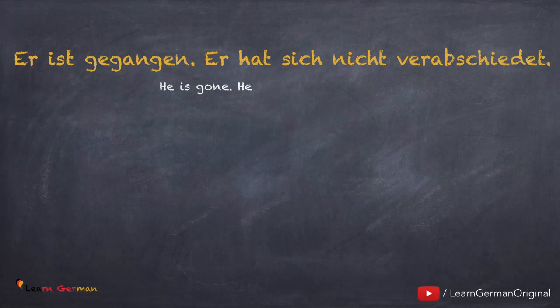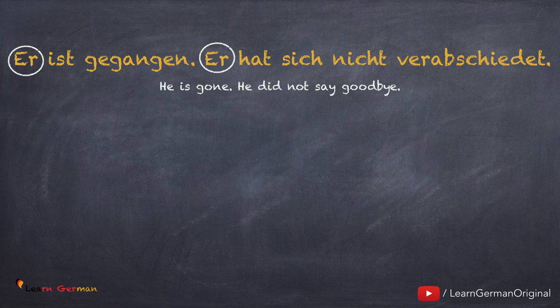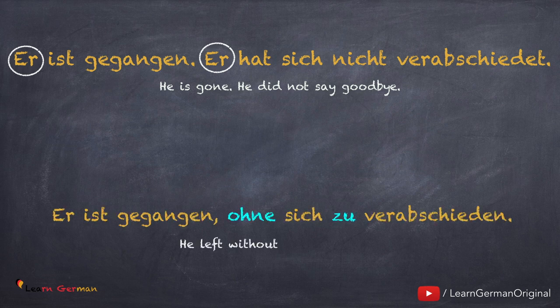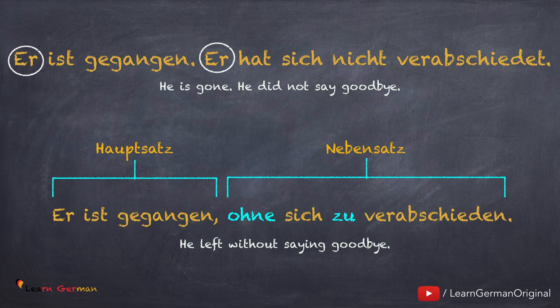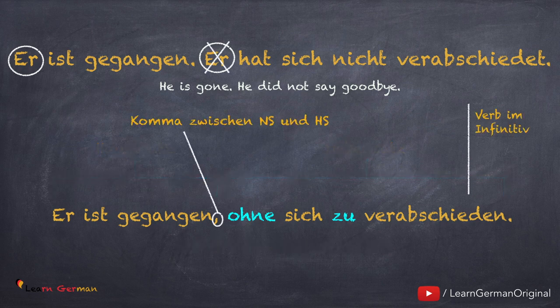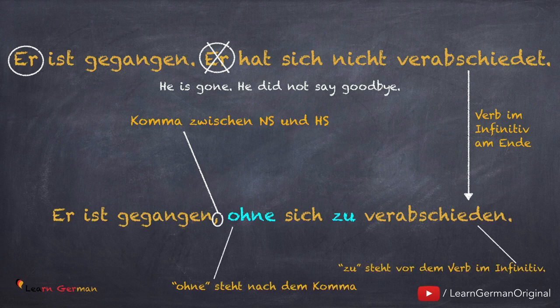In beiden Sätzen ist das Subjekt gleich: er. Man kann sagen: Er ist gegangen, ohne sich zu verabschieden. Er ist gegangen is the Hauptsatz; ohne sich zu verabschieden is the Nebensatz. The sentence structure is the same as for sentences with um zu. You can make these sentences because the subject in the Hauptsatz and in the Nebensatz is the same. Zwischen Hauptsatz und Nebensatz steht ein Komma. Das Subjekt verschwindet, das Verb steht im Infinitiv am Ende, zu steht vor dem Verb im Infinitiv, und ohne steht nach dem Komma.